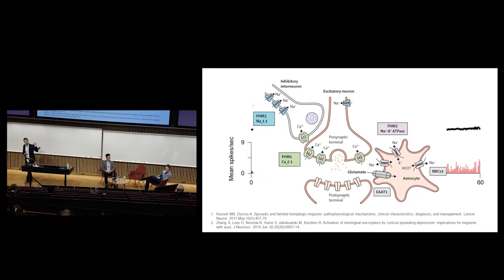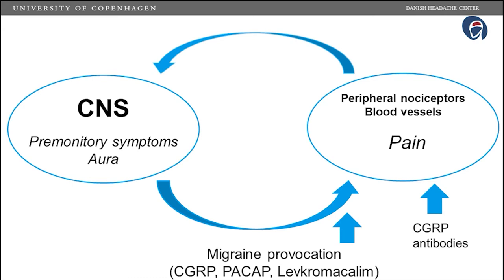We also know how we get from spreading depression to the pain phase of migraine. Based on very good preclinical data, spreading depression may lead to activation of meningeal nociceptors. Overall, it's clear that the first event of a spontaneous migraine attack happens in the CNS. This may proceed to premonitory symptoms, to aura symptoms, or maybe no symptoms at all in some patients. Subsequently, the CNS orchestrates activation of the trigeminovascular system, causing activation of peripheral nociceptors, release of neuropeptides, vasodilation — all of which cause pain.